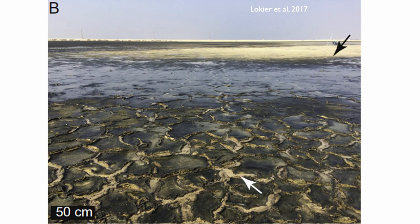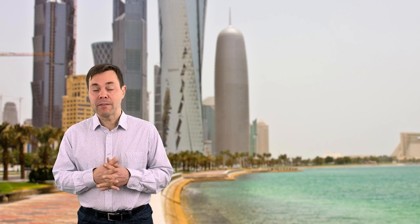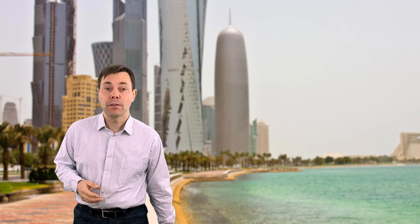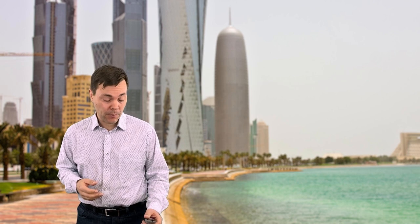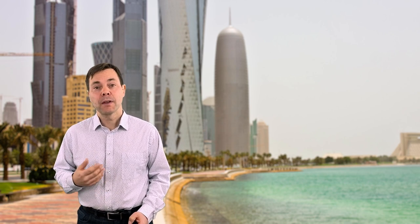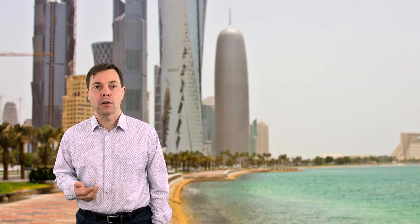In general, the sabcha is an area of net evaporation. You can see that this creates expansion ridges where evaporite minerals grow and basically displace the sediment. It's a very arid environment here in the Gulf. Sabcha are important because it's one of the few places where we know of modern dolomite formation.